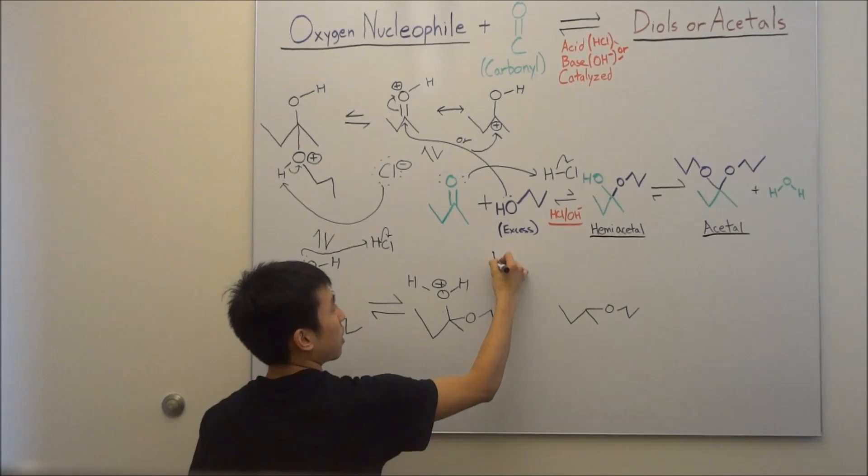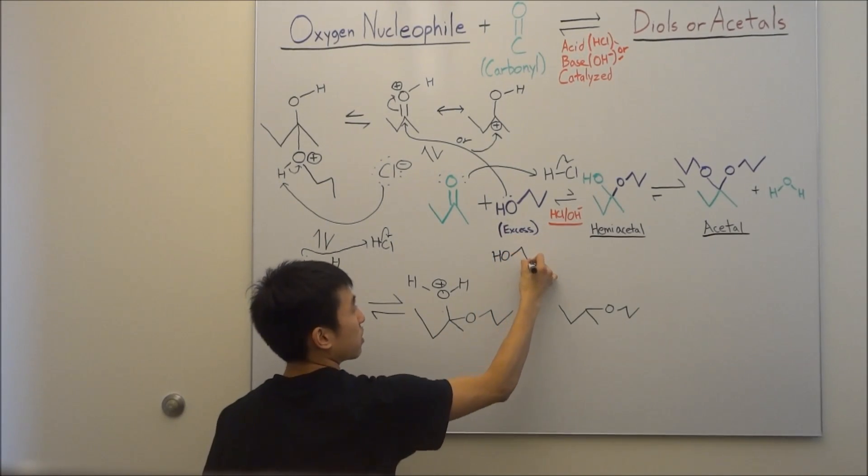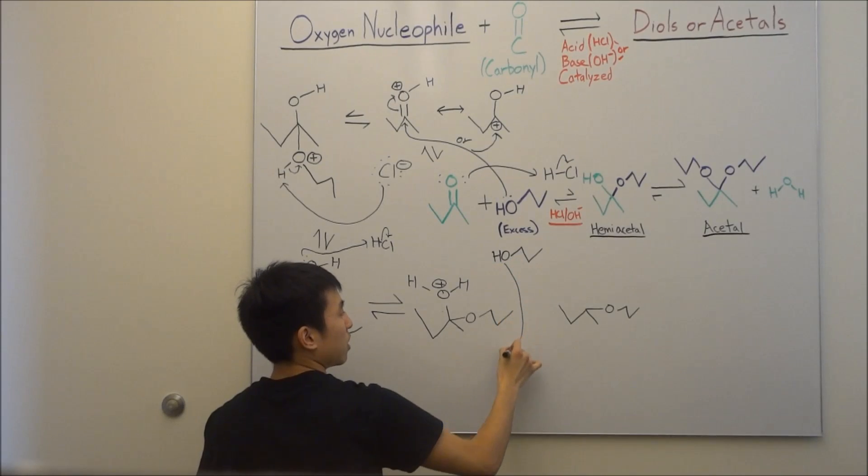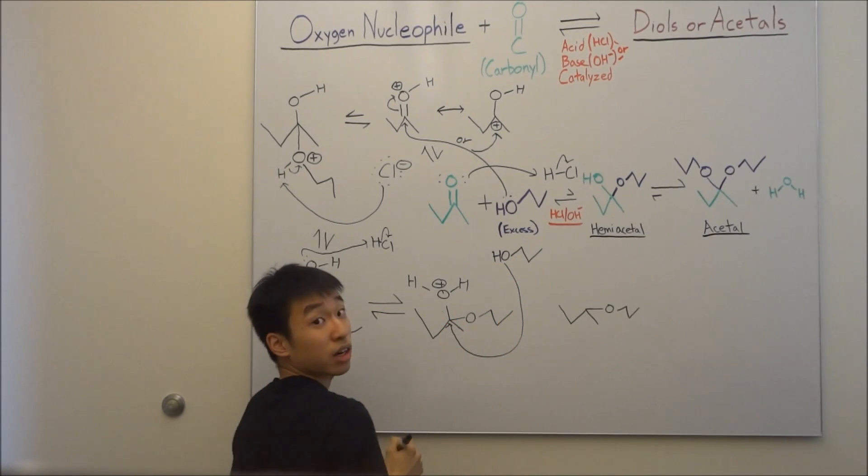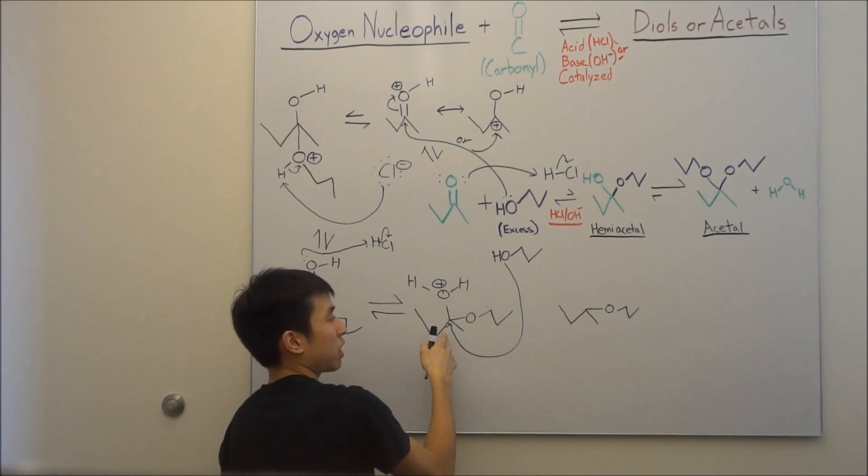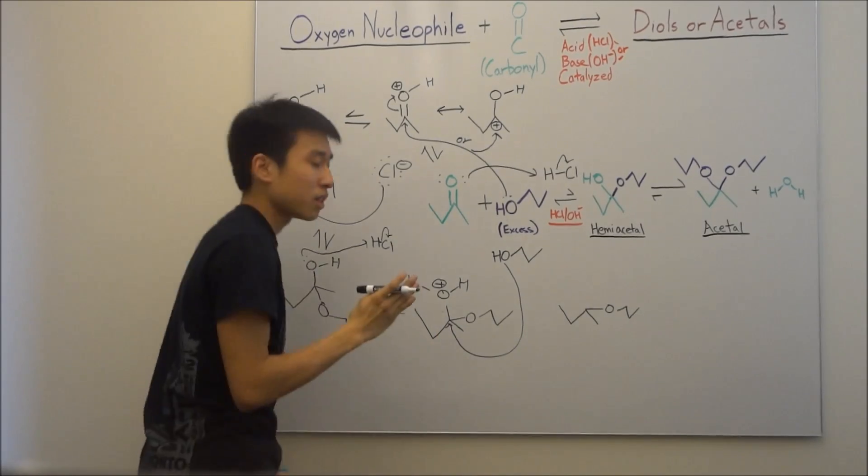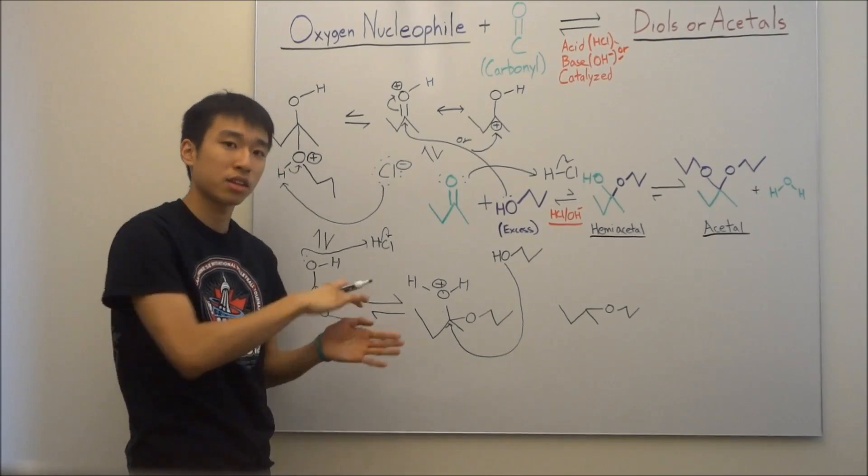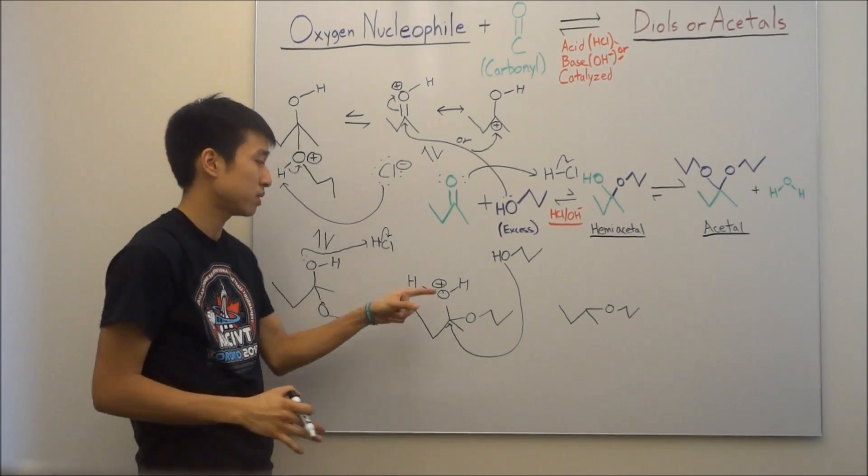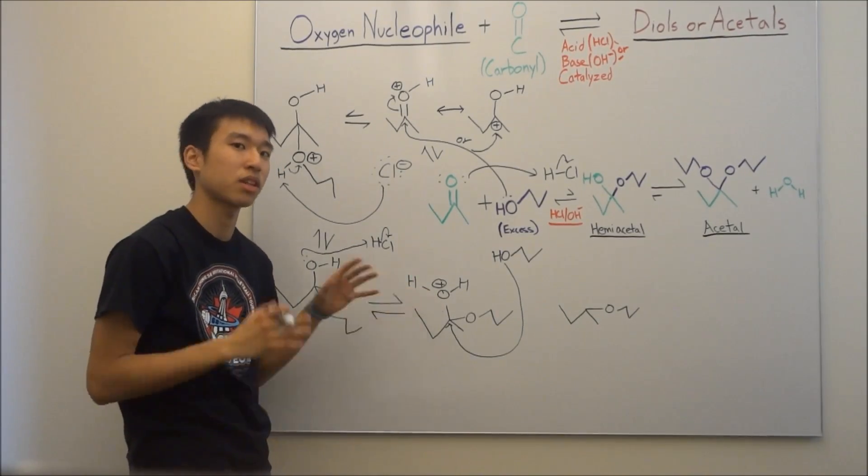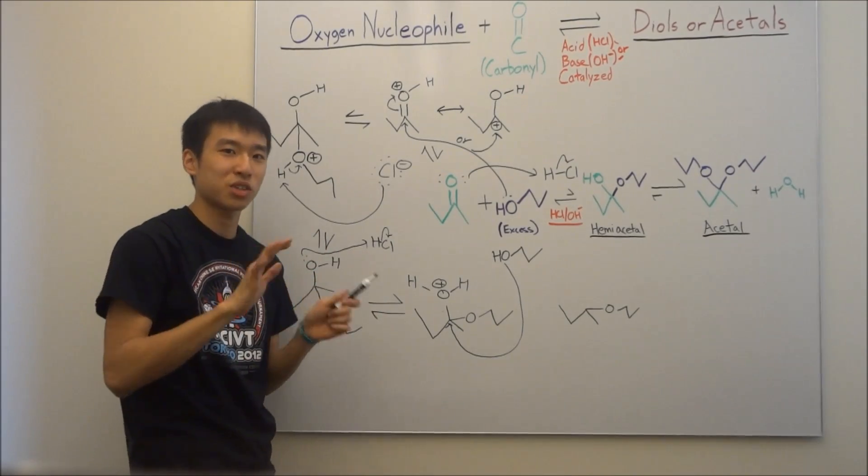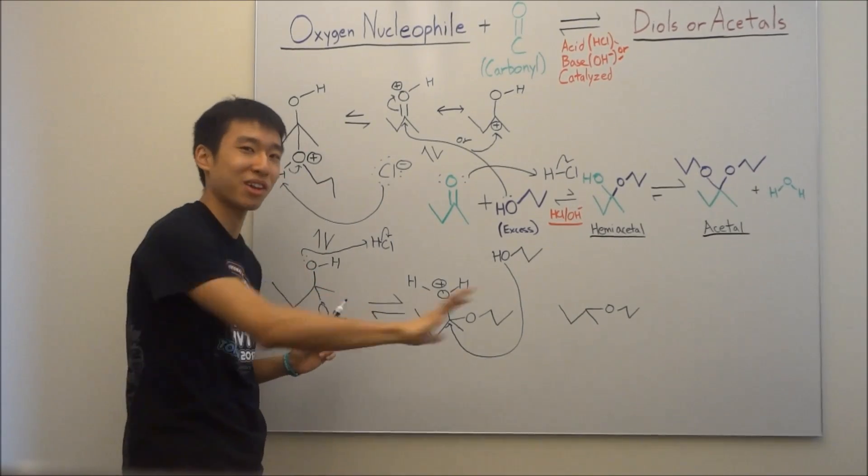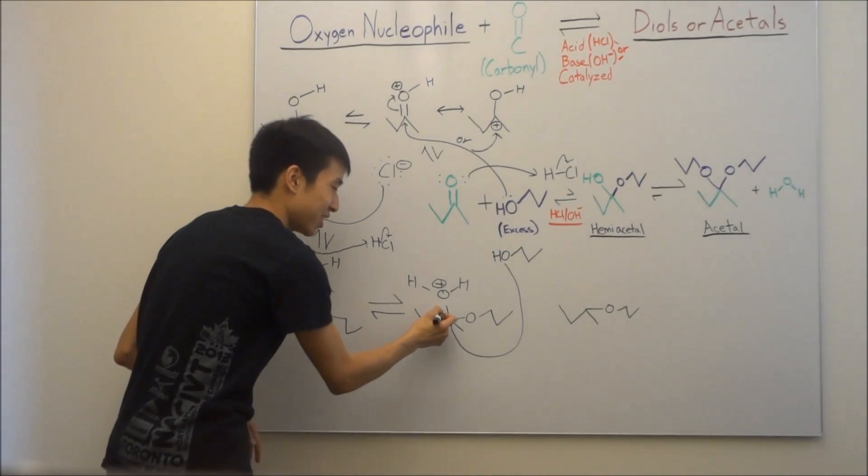When you attack this carbon right here, this carbon has four bonds already. So he's like, okay, I don't need this many bonds. So which one do I give away? He looks around him and what's around him is this positively charged hydrogen molecule. It's like a bomb. So he's like, okay, get your unstable butt out of my molecule right now. I don't need you. And that's exactly what happens.